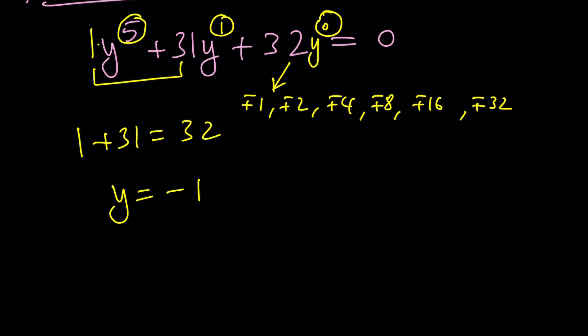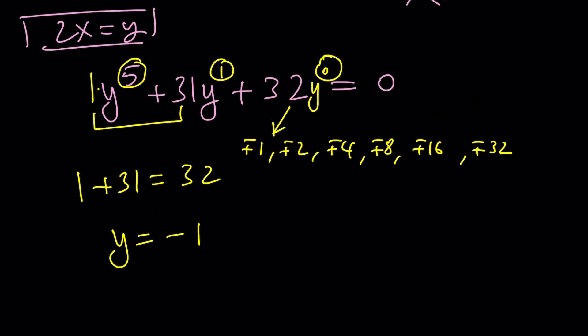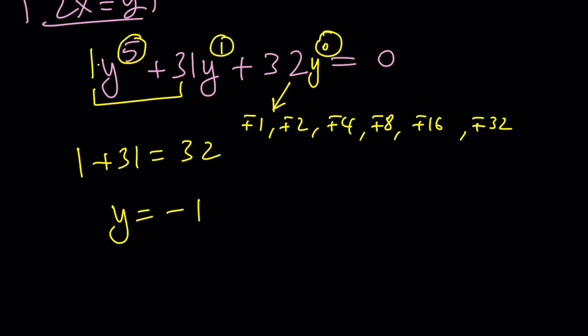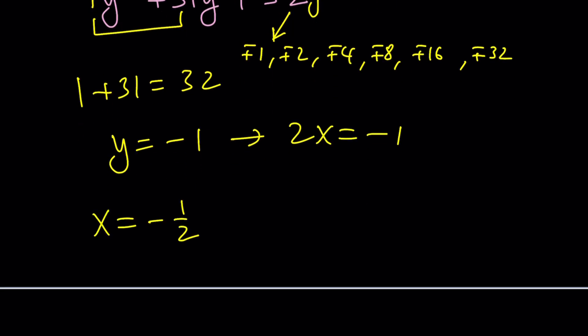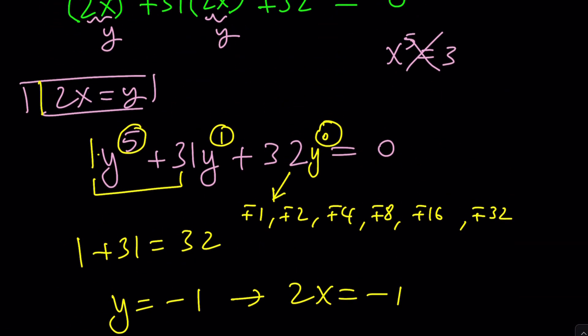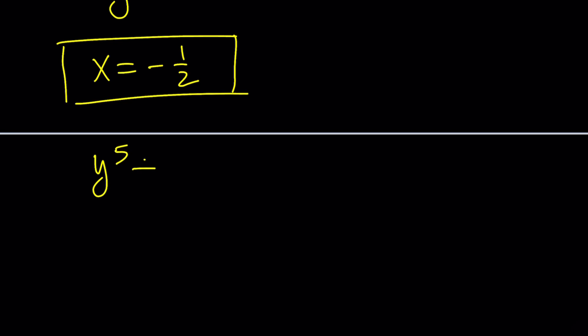But what does that imply? Because we're not looking for y. We're looking for x. There's a joke about stop asking about your x, they're algebra, something something. You probably know it. Y is negative 1, that implies 2x equals negative 1, which means x equals negative 1 half. We found a rational solution. Thanks to the rational root theorem. We didn't use it, but we could have found it with the rational root theorem as well.